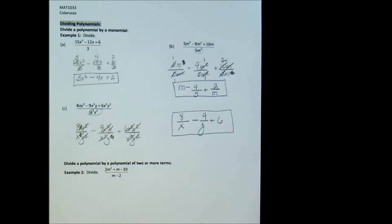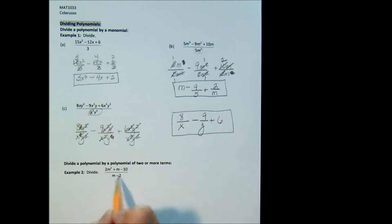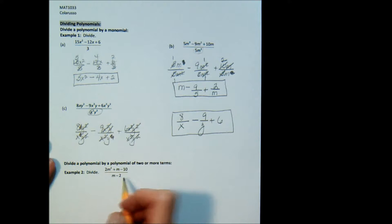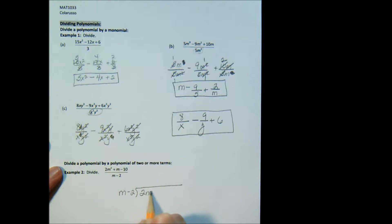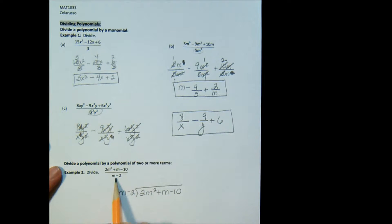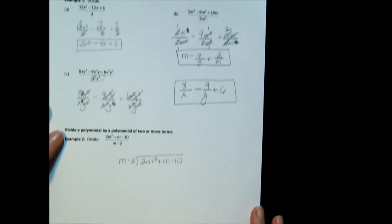Now we're going to look at dividing a polynomial by a polynomial of two or more terms — we're going to limit it to two terms in these examples. Notice that my denominator here is m minus 2. I can't split my fraction into three pieces over that common denominator and cross-cancel — it just won't work. So instead, we're going to do regular old-fashioned long division. Write your division problem like this: m minus 2, which is my denominator, becomes my divisor, being divided into 2m² plus m minus 10.